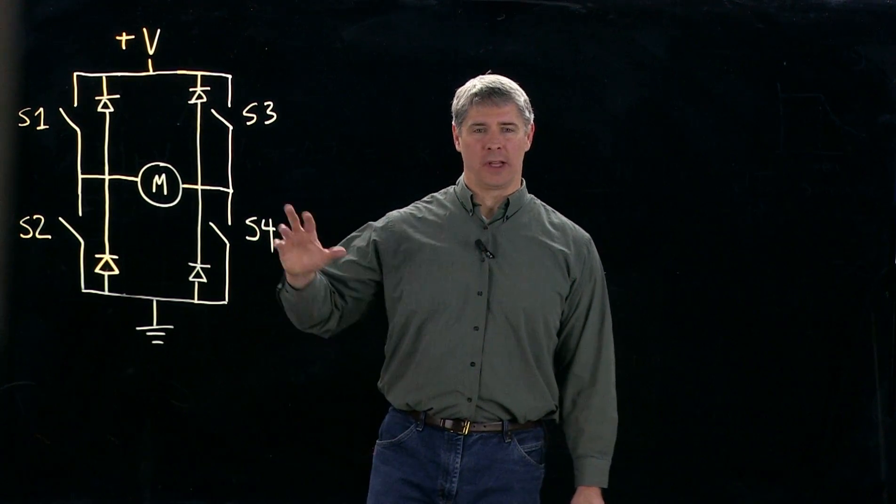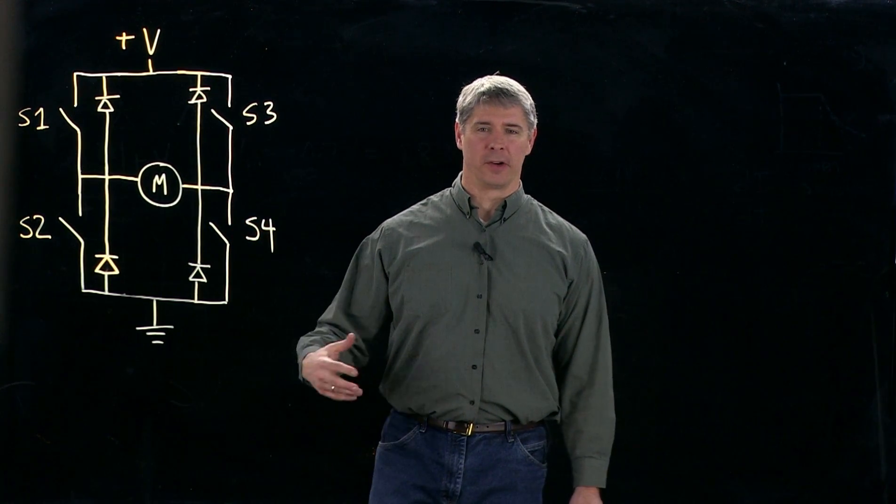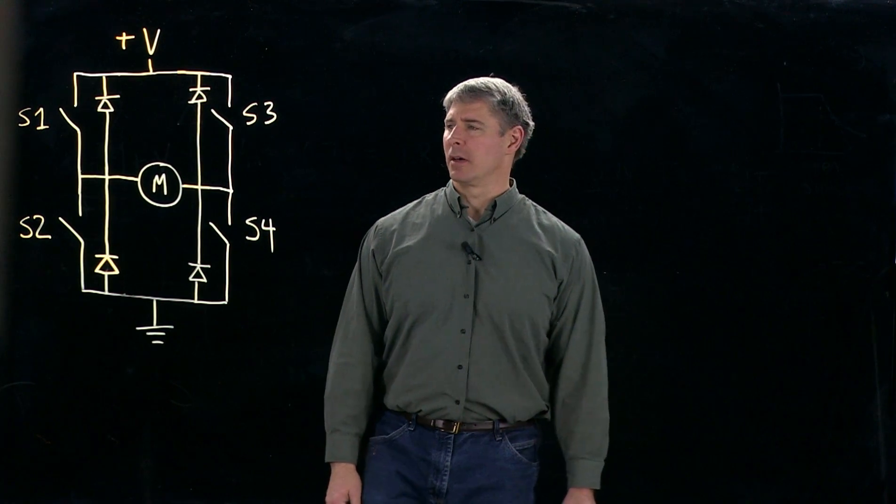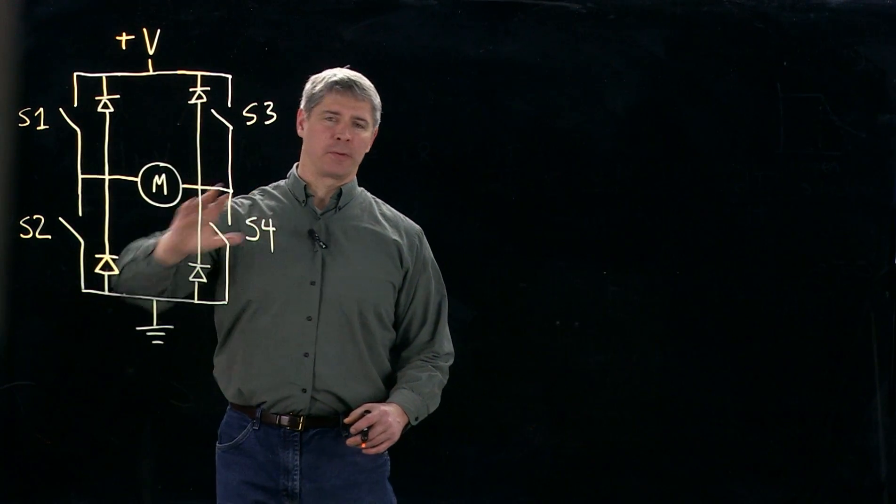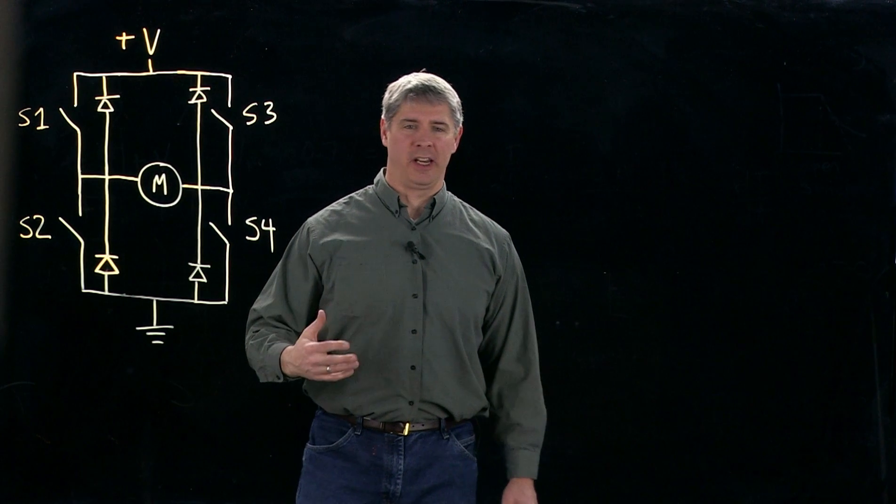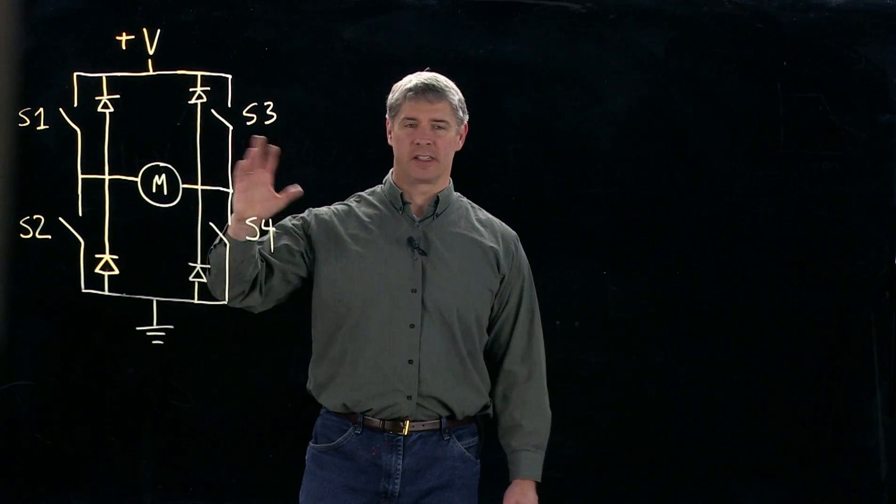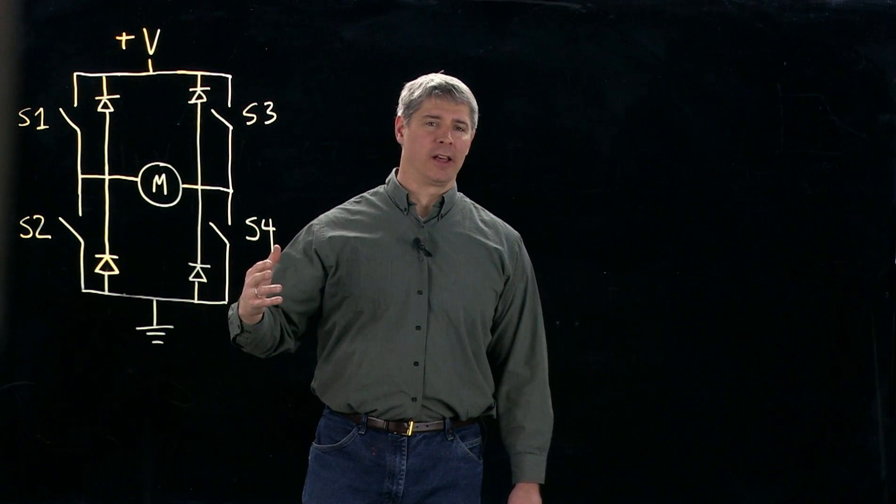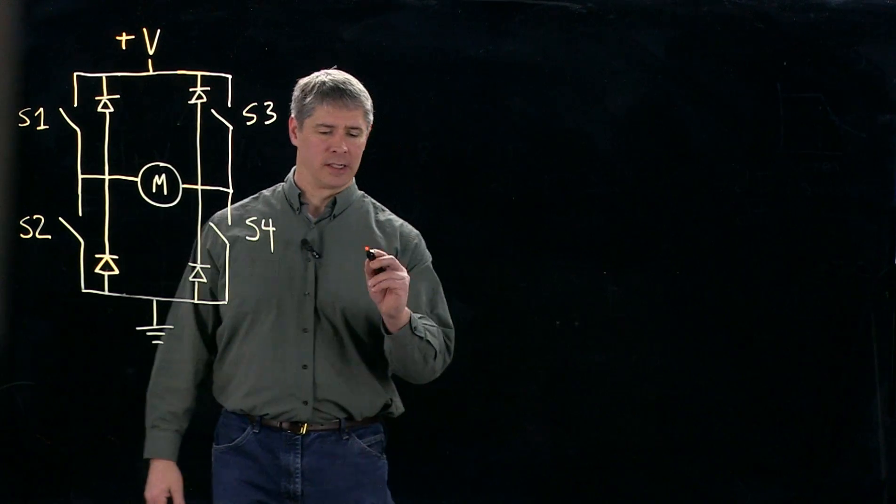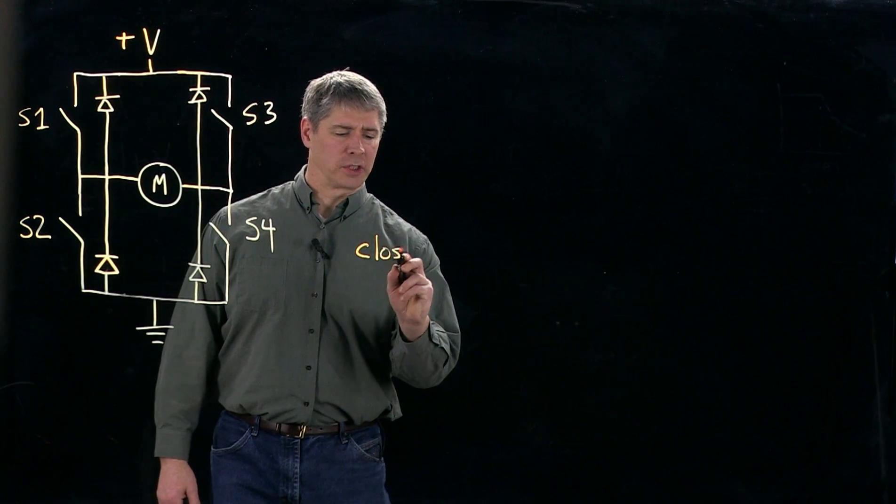Let's take a look at how they work to allow us to run the motor in either direction. Because there's four switches, there's 16 or two to the four different states that this H-bridge can be in, but not all of them are relevant. So let's look at a few where these are the closed switches.